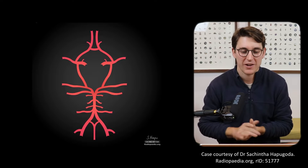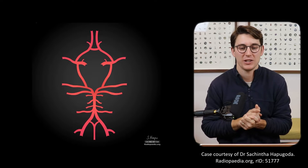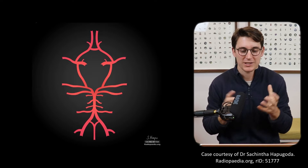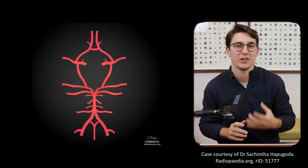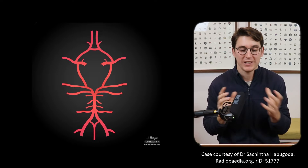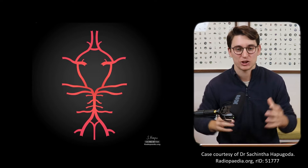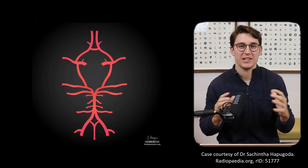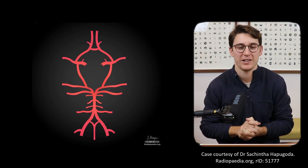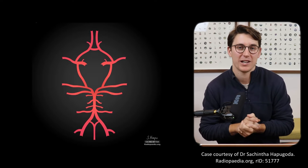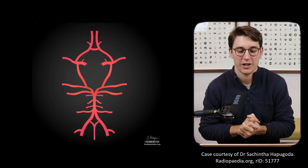Starting with this 2D image - it's great for identifying vessels and learning their names, but it's really terrible at showing you the 3D relationship of these vessels in the brain, and that's why we're going to have a look at the MRA.